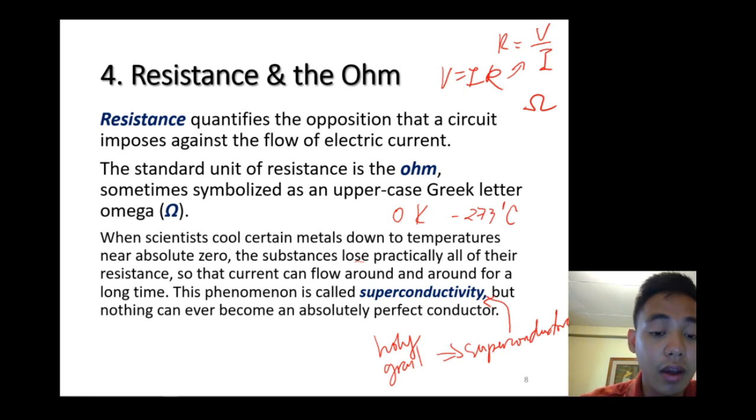Nothing can ever become an absolutely perfect conductor. In theory, it's almost impossible to reach an absolutely perfect conductor because there's always resistance. It's almost impossible to have resistance equal to zero, but close to zero, yes, it's possible.